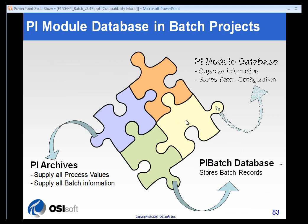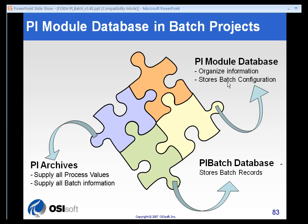If we come back to our jigsaw diagram of how everything is tightly integrated, we had our PI Archives, which stores our process values, the Batch Database, which stores the actual batch records, and the Module Database is where we are now — it stores batch configuration. We are going to spend a good amount of time looking at how batches are configured.